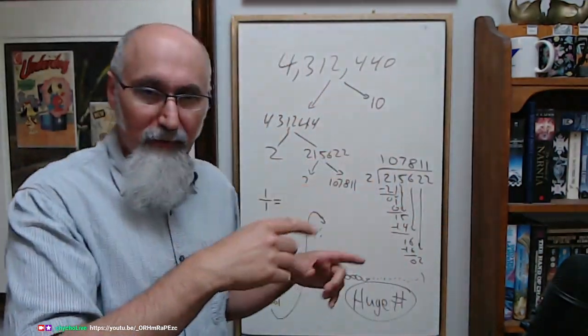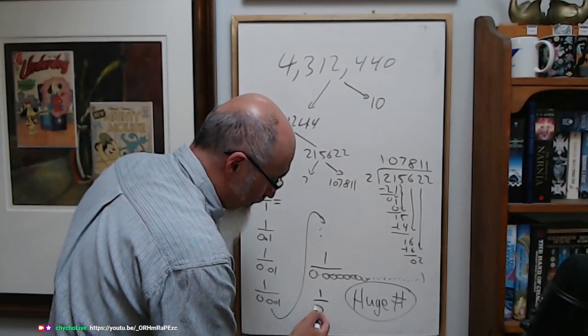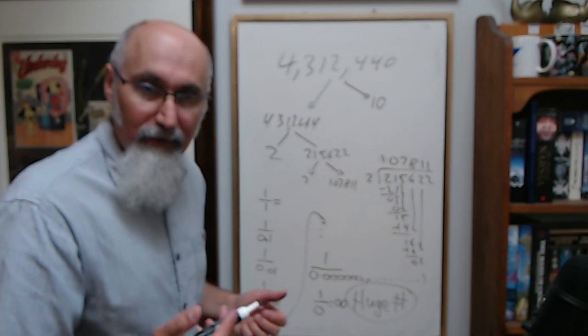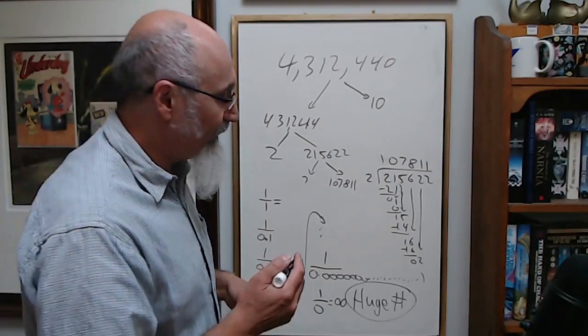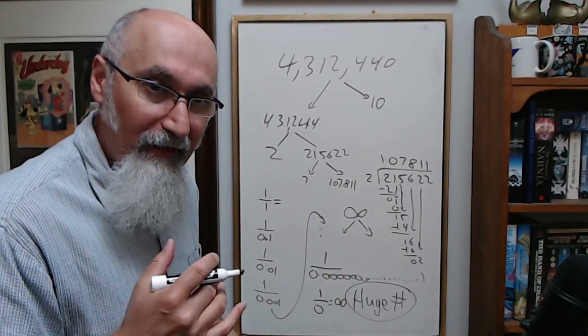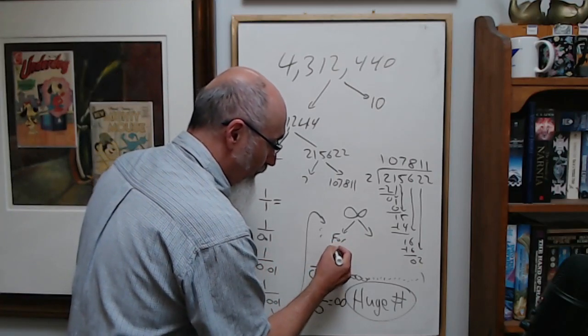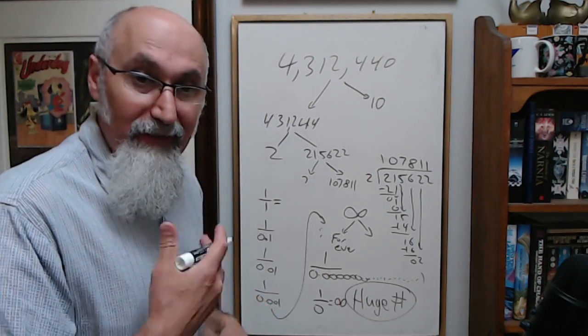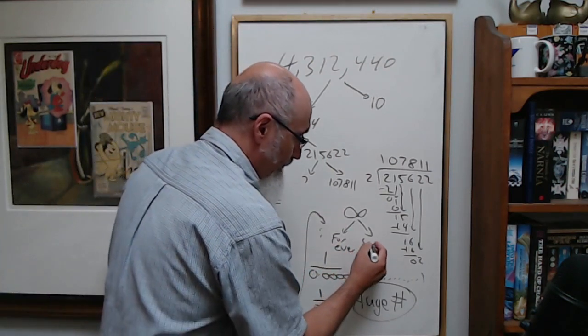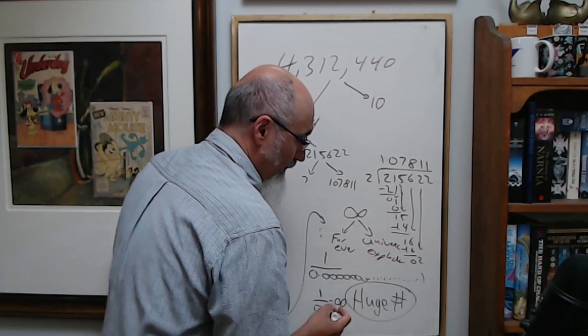There was a lot of haters saying this is wrong, this doesn't make sense because you can't cross multiply this and this because if you do, 1 divided by 0 equals infinity. And they said infinity is not a real number. Well, I think of infinity in two different ways: counting forever, and the universe explodes.